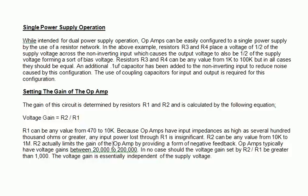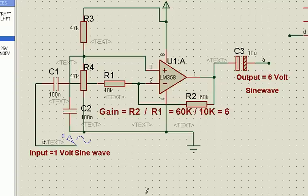R2 actually limits the gain of the operational amplifier by providing a form of negative feedback. Op-amps typically have a voltage gain between 20,000 to 200,000. In case should the voltage gain be set by R2 and R1 be greater than 1,000, in no case it should be more than 1,000. The voltage gain is essentially independent of supply voltage. That is the function of the operational amplifier in a nutshell. It is very simple but it is independent of the supply voltage.